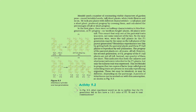Mendel used a number of contrasting, visible characters of garden peas: round or wrinkled seeds, tall or short plants, white or violet flowers, and so on. He took pea plants with different characteristics — a tall plant and a short plant — produced progeny by crossing them, and calculated the percentages of tall or short progeny. There were no halfway characteristics in the first generation or F1 progeny — no medium height plants. All plants were tall, meaning only one of the parental traits was seen, not some mixture of the two.